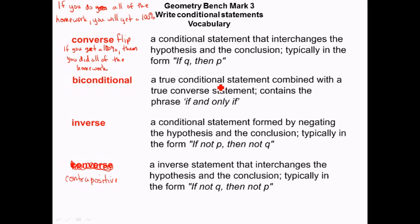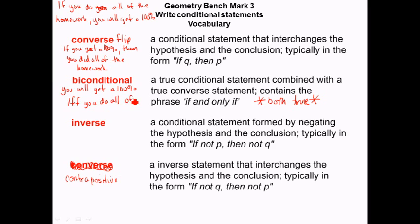Biconditional: if both the original statement and the converse — so in the correct order and flipped — if they're both true, then you can write a biconditional. But they have to be both true; that's really important. If one way is not true, it's not biconditional. So when you do that, you write: you will get 100% if and only if you do all of the homework. 'If and only if' can be abbreviated with two F's, and every math person in the world will know what that means.